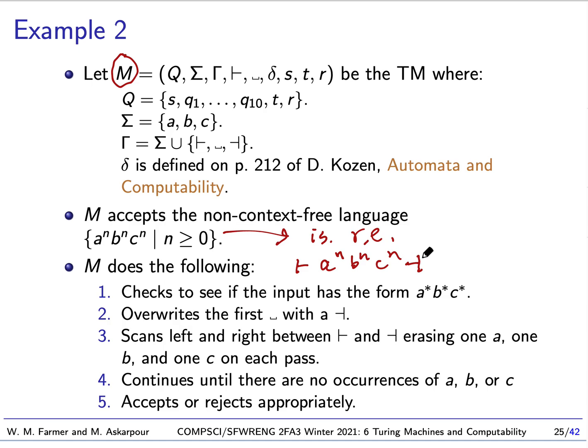That is our second example. We're going to stop here, and next time we're going to spend more time on the difference between recursively enumerable and recursive sets. See you then.